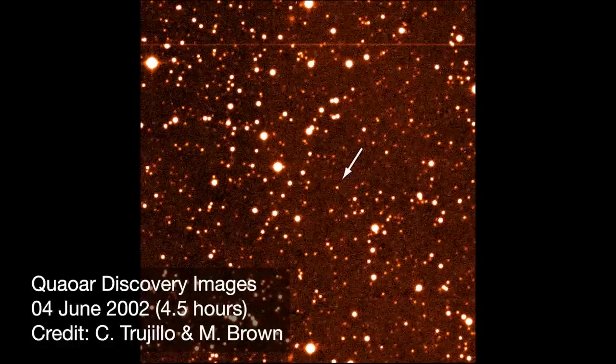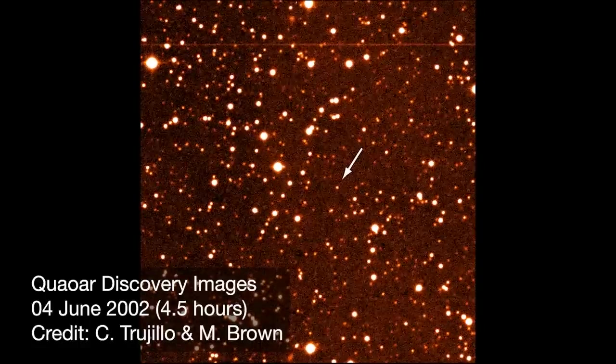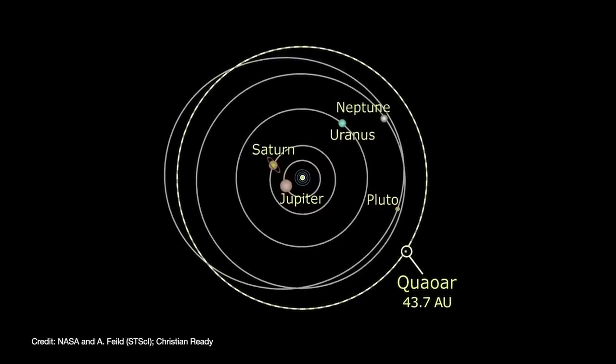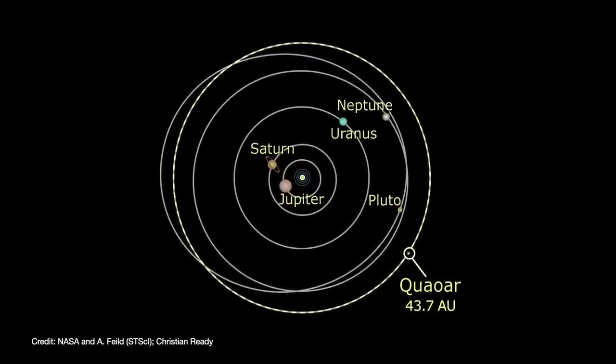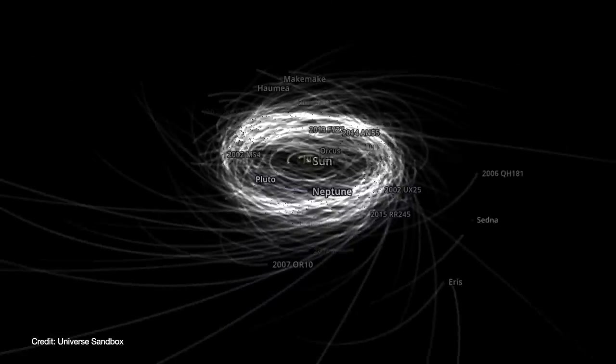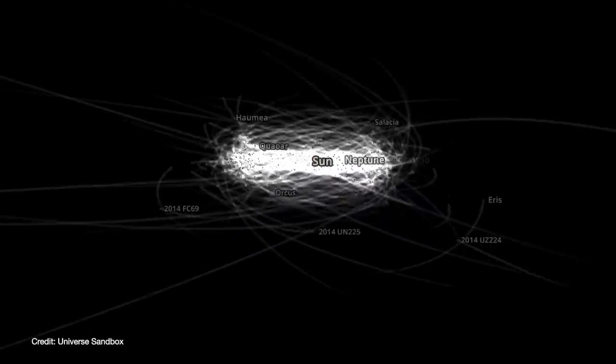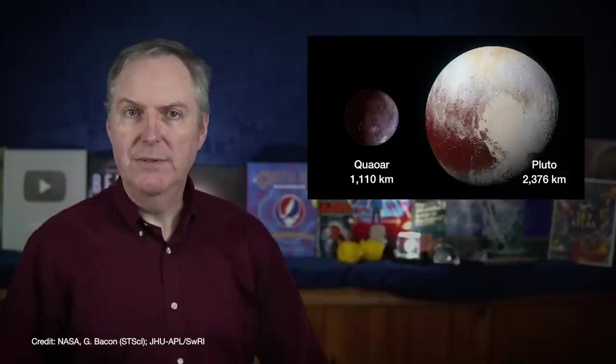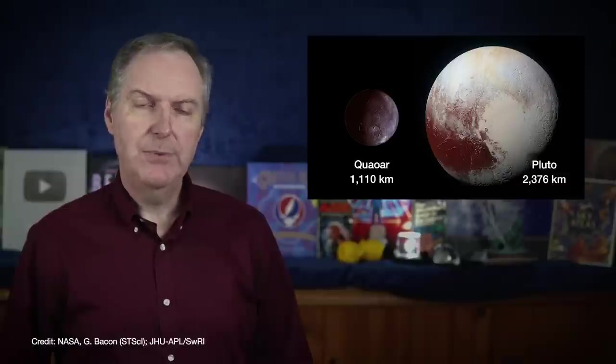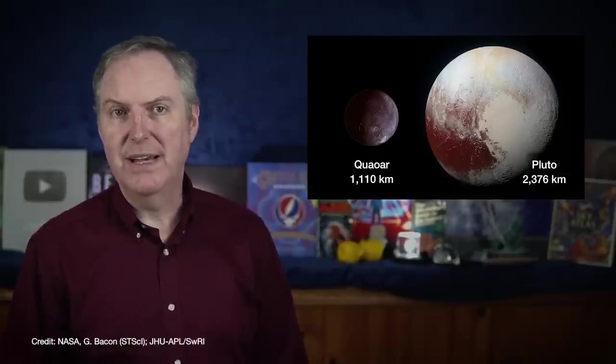The dwarf planet Quaoar was discovered way back in 2002 by Chad Trujillo and Mike Brown, and they found the object orbiting at a distance of 43 astronomical units from the Sun. That's 43 times further from the Sun than Earth, and that puts it firmly in the Kuiper Belt, which is a region of small icy bodies that orbit out past Neptune. The dwarf planet is, well, it's dwarf. At about 1,100 kilometers in diameter, it's about half the size of Pluto. It was given the name Quaoar after the deity of the indigenous Tongva people of Southern California.